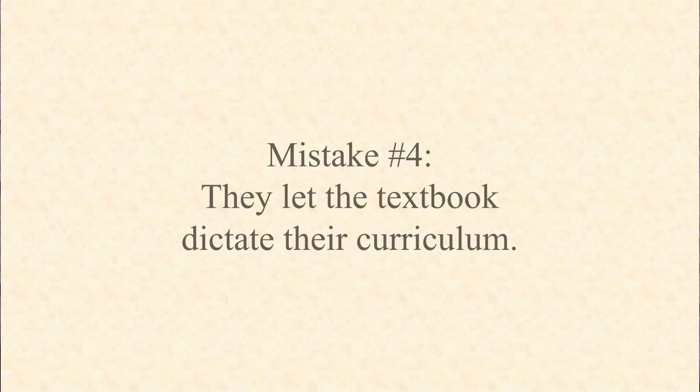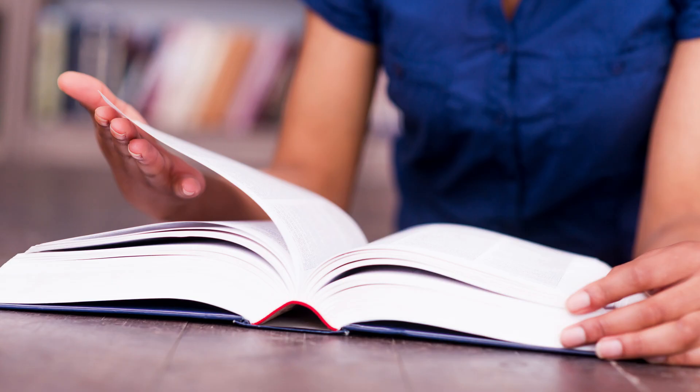The fourth mistake that a lot of teachers make in teaching AP Chemistry: they let the textbook dictate their curriculum. Don't let a textbook tell you what to teach. Some teachers will find a giant textbook that has been bought for their course — it weighs about a hundred pounds, it costs about two dollars a pound — and they feel that they have to go through that textbook, literally starting with chapter one and going page by page through chapter two, chapter three, and so on. By the time they get to the end of the year, maybe they've gotten through a dozen chapters. Well, there's a problem with this: a lot of the important parts of the AP curriculum are found in the later chapters of the book.